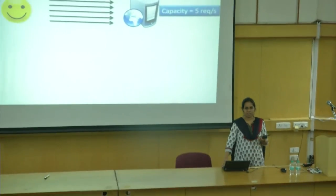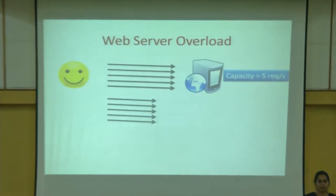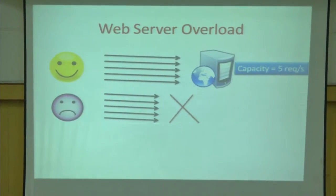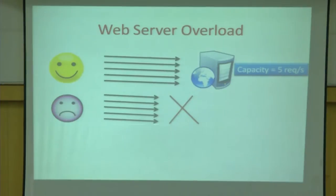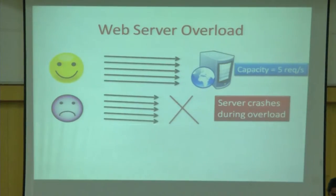So 5 users per second come in and they are served. But when more users than that come in in any given second, the queue starts to build up. The server has a small queue, the queue overflows, and eventually users arriving beyond the capacity will not get served — they will perceive what is called a website crash.